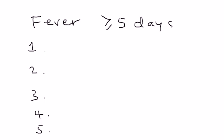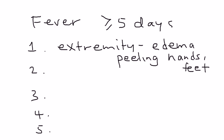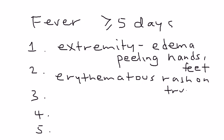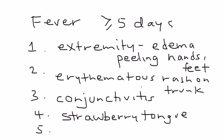The first criterion involves the extremities — specifically edema, swelling, and sometimes peeling of the hands and feet. The second one involves an erythematous rash on the trunk. The third diagnostic criterion is conjunctivitis. The fourth is something called a strawberry tongue, which looks exactly like a strawberry. The last one is lymphadenopathy, in particular cervical lymphadenopathy.